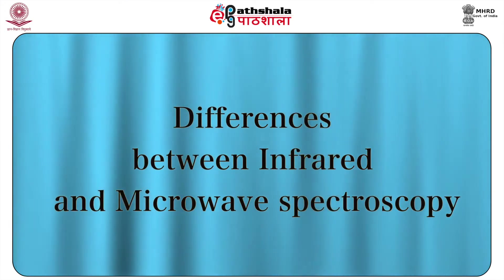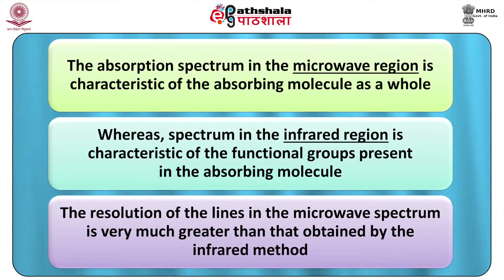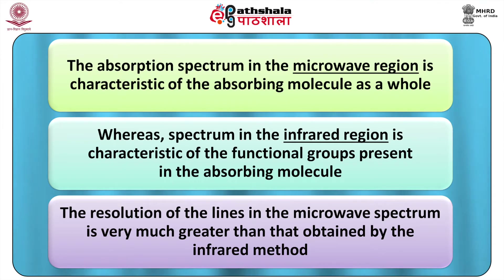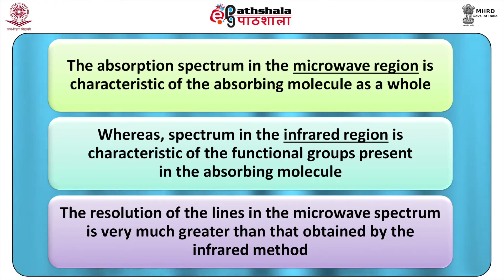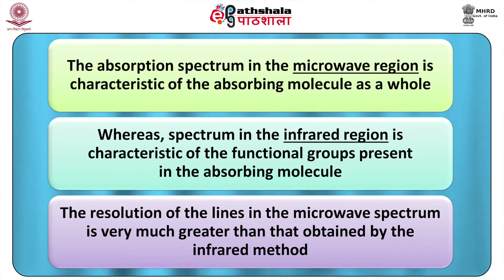Now we shall see the differences between infrared and microwave spectroscopy. First, the absorption spectrum in the microwave region is characteristic of the absorbing molecule as a whole, whereas the spectrum in the infrared region is characteristic of the functional groups present in the absorbing molecule. Second, the resolution of the lines in the microwave spectrum is very much greater than that obtained by the infrared method.